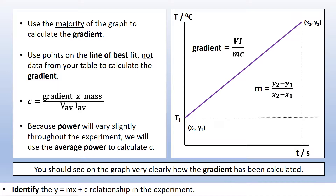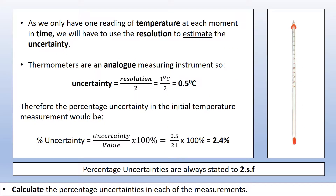It should be really obvious from looking at the graph how the gradient has been calculated. Now let's look at some uncertainties in this experiment. One source of uncertainty is our temperature measuring device, which can only measure to the nearest degree — resolution of one degree. Since we take only one temperature measurement at each moment, we use the resolution to estimate uncertainty. A thermometer is an analog instrument, so uncertainty is half the resolution, or 0.5 degrees. The percentage uncertainty in the initial temperature is 0.5 divided by 21, times 100, giving 2.4%.